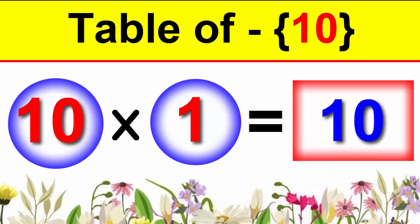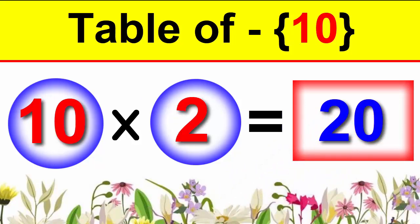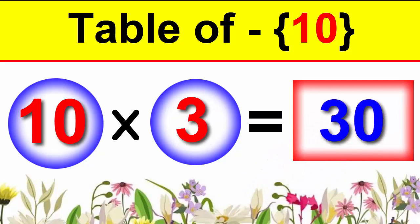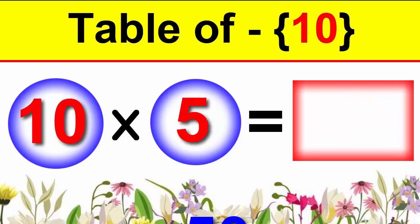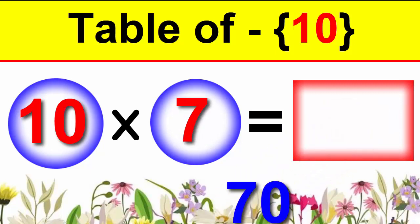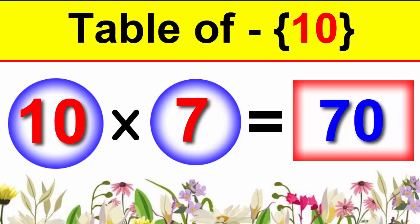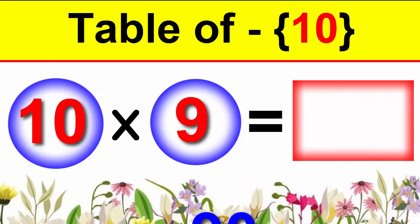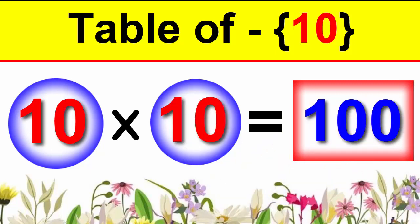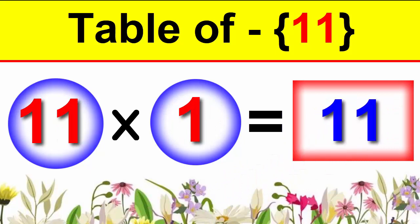10×1 is 10, 10×2 is 20, 10×3 is 30, 10×4 is 40, 10×5 is 50, 10×6 is 60, 10×7 is 70, 10×8 is 80, 10×9 is 90, 10×10 is 100.